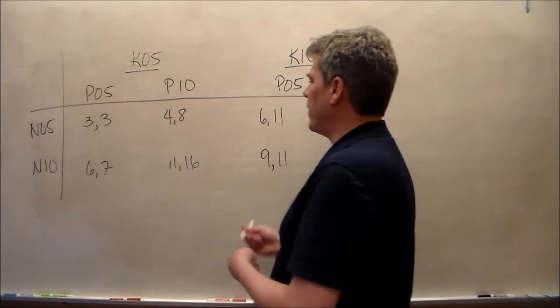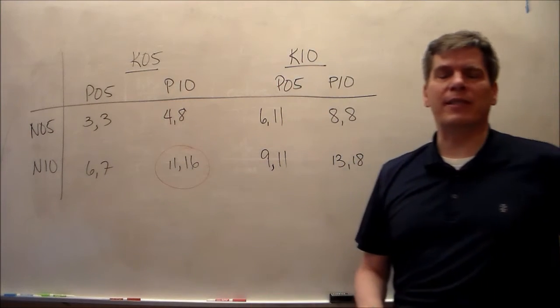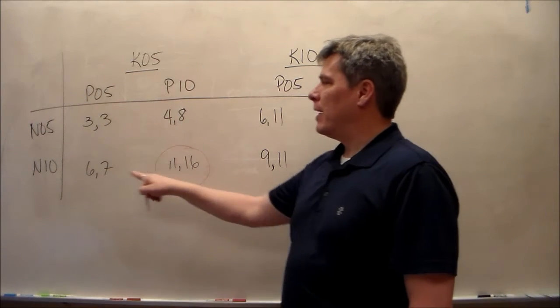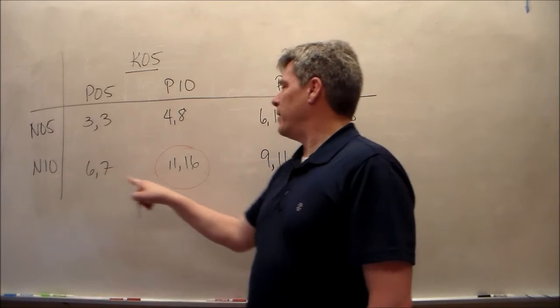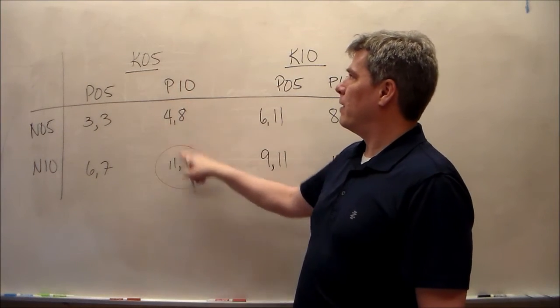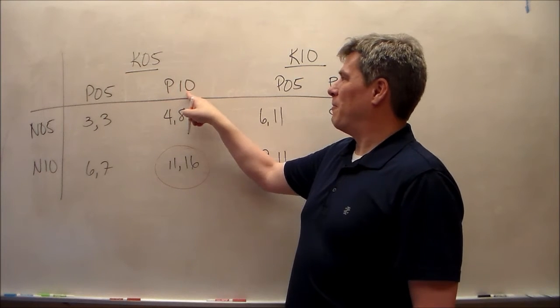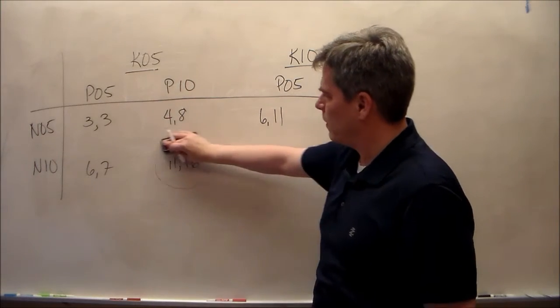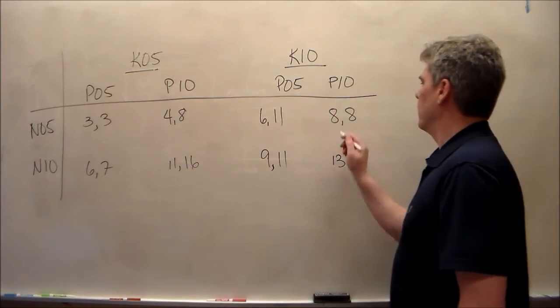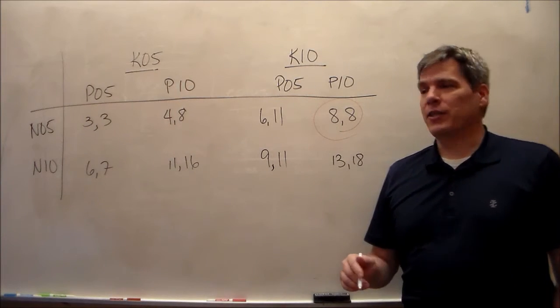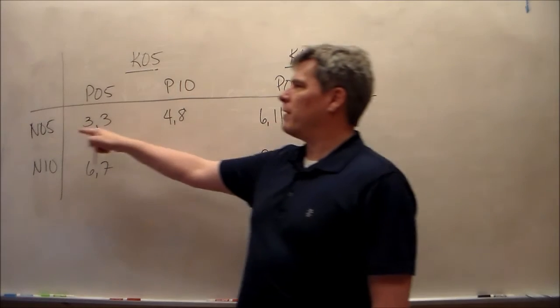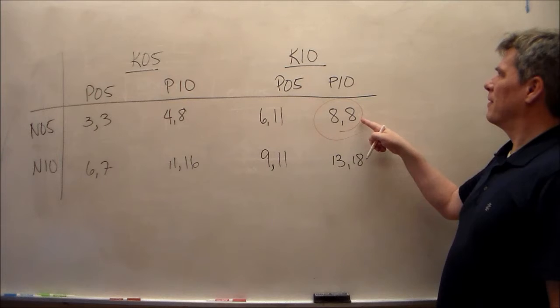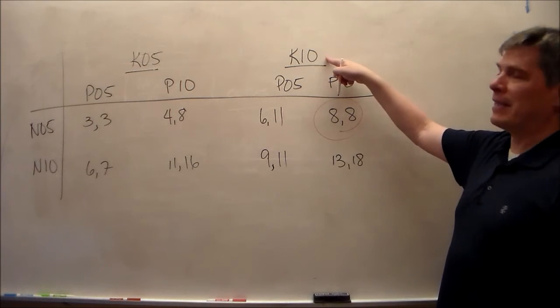So this value right here, or these two values right here, referred to two flowers in the beds. One was 11 inches tall, one was 16 inches tall. In that particular bed, nitrogen of 10% was added, phosphorus of 10% was added, potassium of 5% was added. These are two flowers, both 8 inches tall. In this flower bed, nitrogen of 5% was added, P of 10% was added, and K of 10% was added.